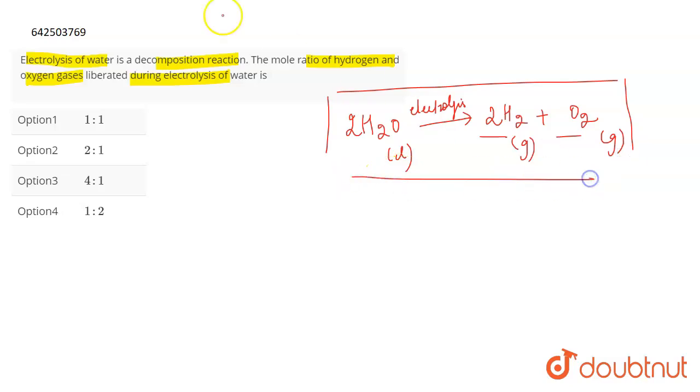According to this balanced reaction, the molar ratio of hydrogen and oxygen gas will be 2:1. Two parts will be H2 and one part will be O2. So the molar ratio of the gases formed during the electrolysis process is 2:1, which is given in option number 2. That's the correct answer.